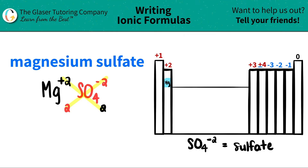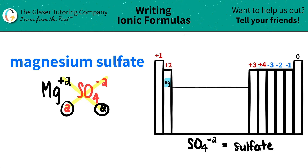Here's the thing: if you see that you have a number that's the same and it's greater than 1, you have to simplify it by division. Remember, ionic compounds always want to be in their most simplified form. So if this was 2 and 2, you got to simplify. 3 and 3, 4 and 4 — you have to simplify them. So if I just divide each one by 2, I can get a lower, more simplified number. In this case, it's going to be 1.